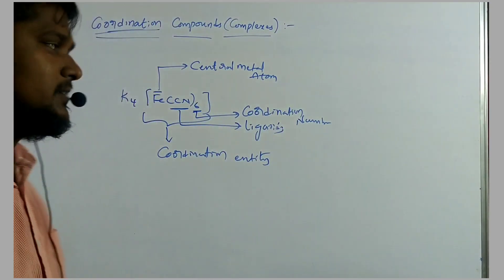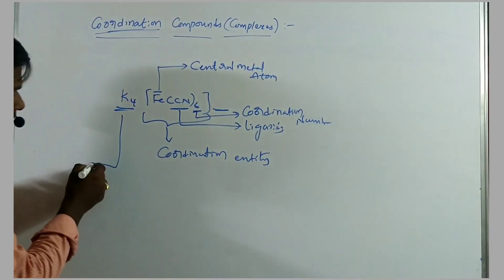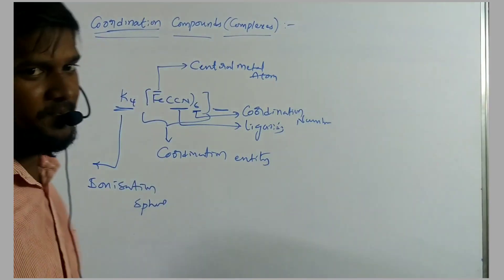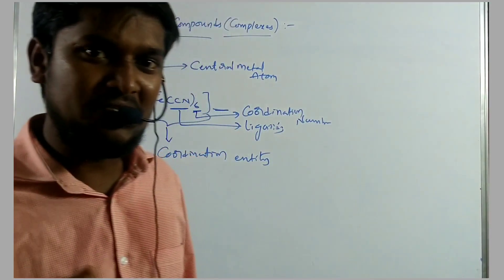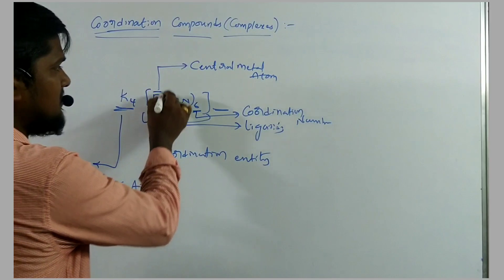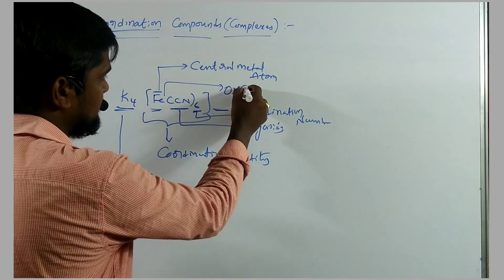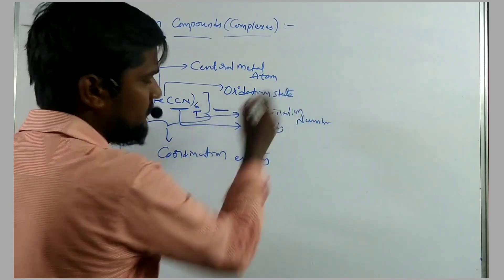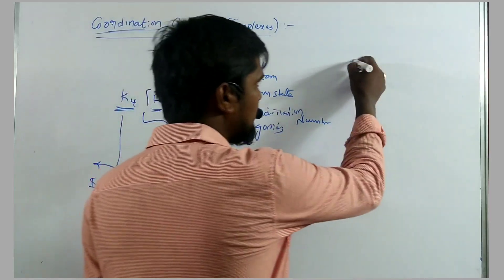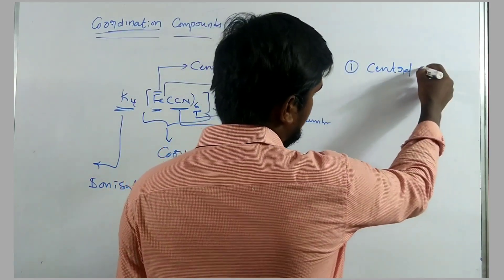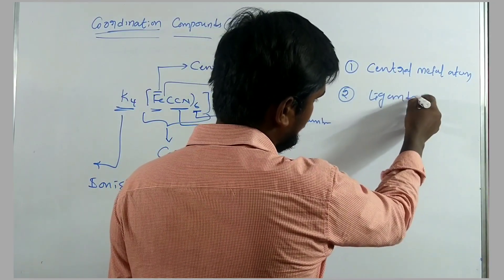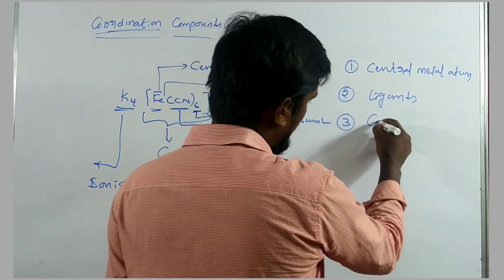The left and right side of the coordination sphere is known as the ionization sphere. The overall charge carried by the central metal atom is known as the oxidation state. These are the basic terminologies involved in coordination complexes: central metal atom, ligands, and coordination number.